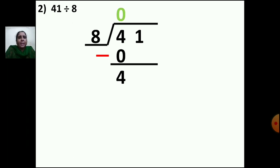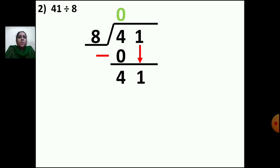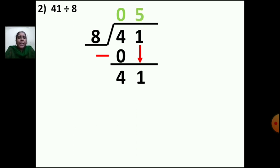Now bring the second number down. Put one arrow mark — the second number is 1, so bring 1 down. Now you have 41. You have to say the table of 8 to find the nearest number to 41. 8 ones are 8, 8 twos are 16, 8 threes are 24, 8 fours are 32, 8 fives are 40. You can take 40 because it is very near to 41. Write 5 up and 40 down — that is 8 fives are 40.